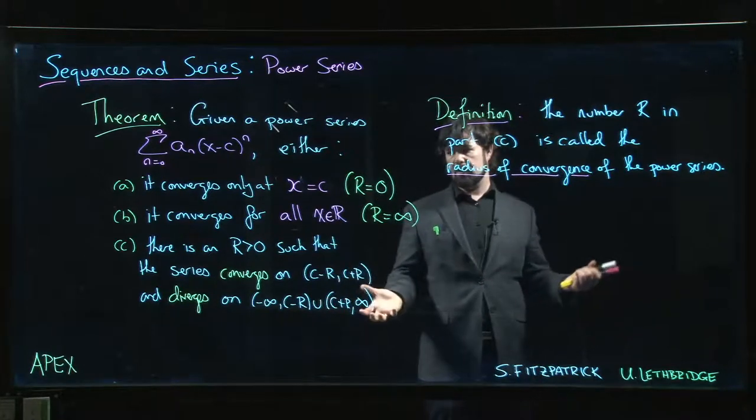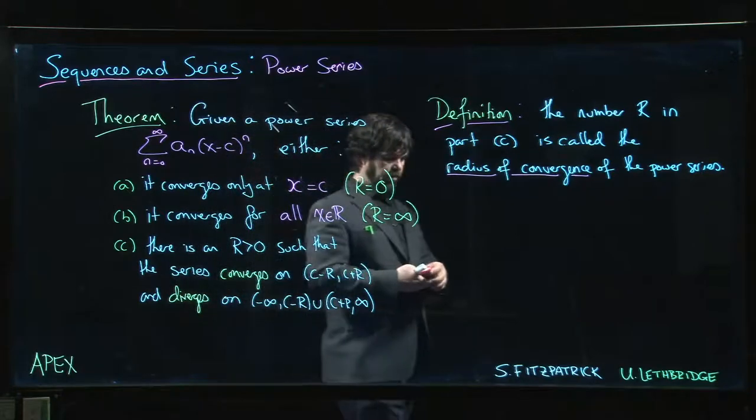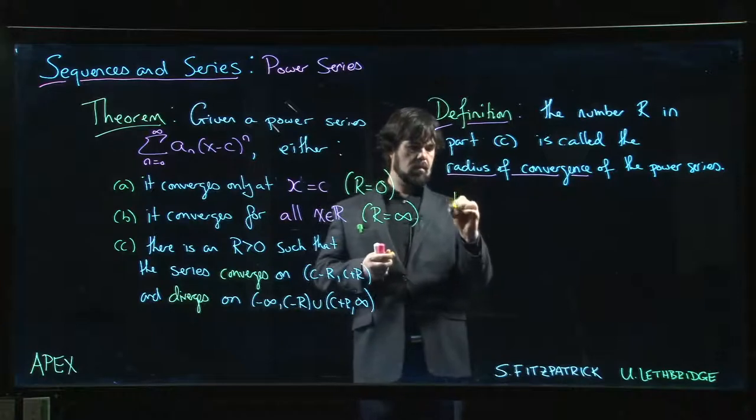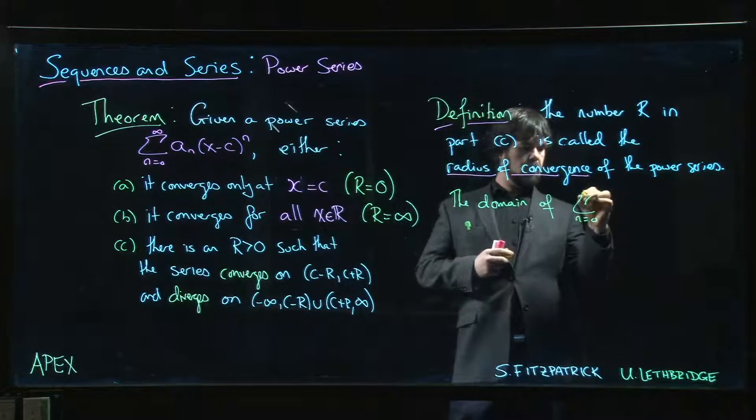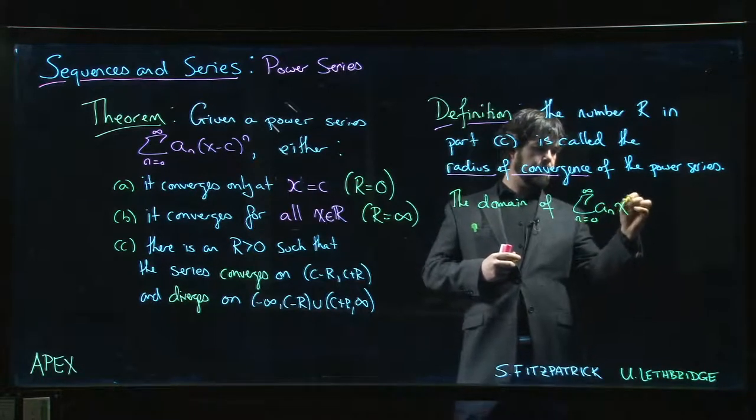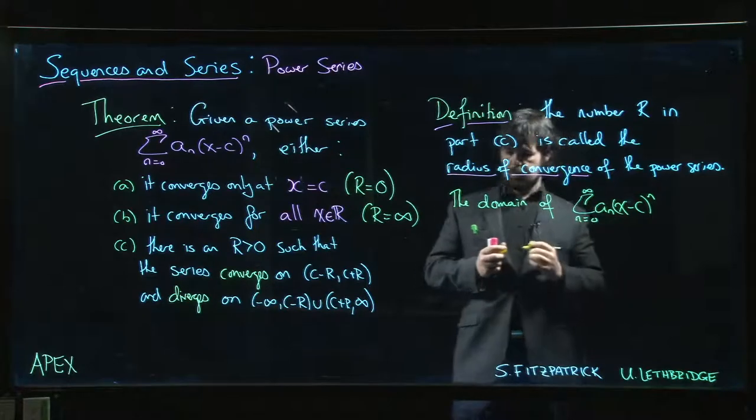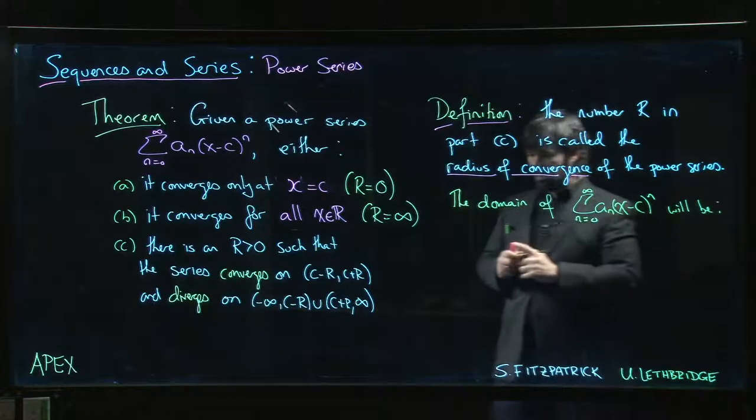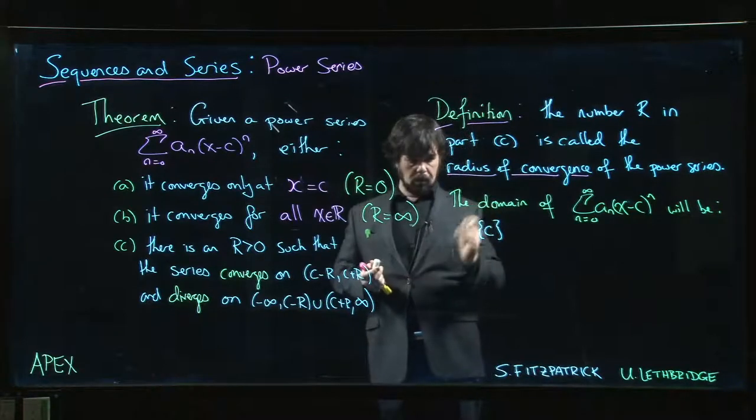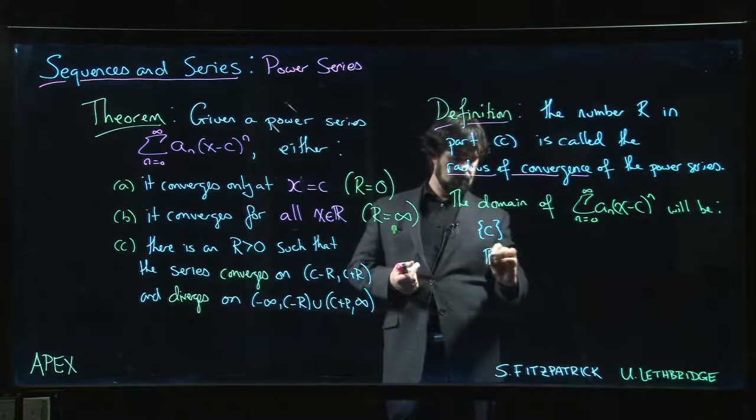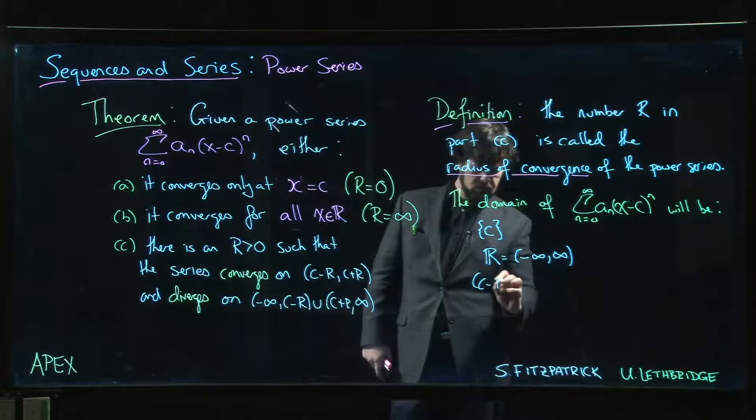You can also consider the interval of convergence, which is the domain of your power series. There's actually a number of possibilities. In the first case we just get a single point C. We could get the interval from minus infinity to infinity, or we could have C minus R to C plus R as it is here.